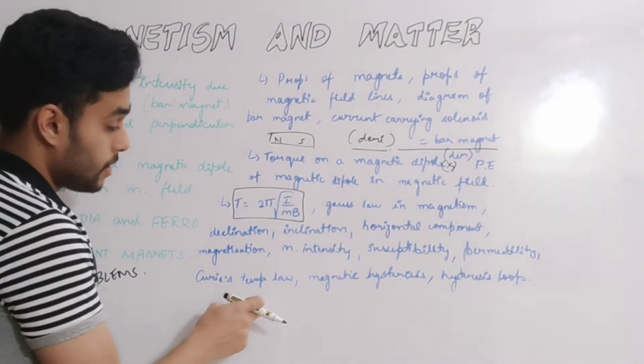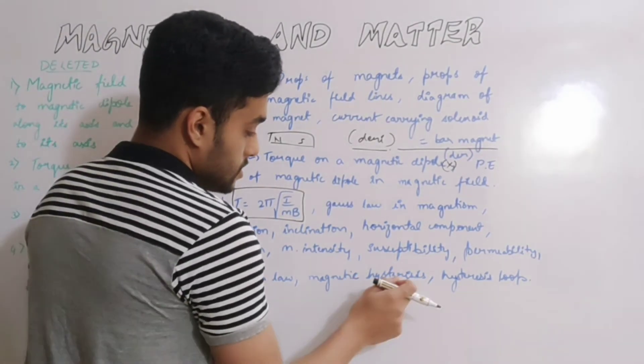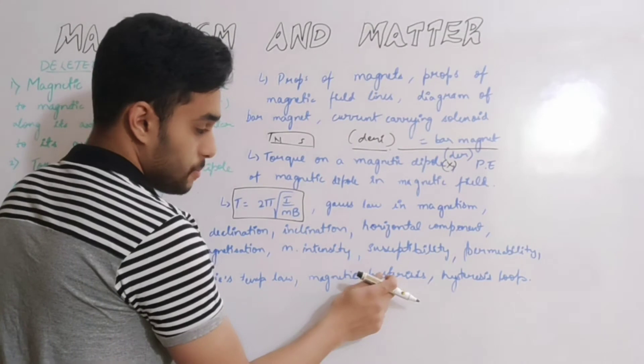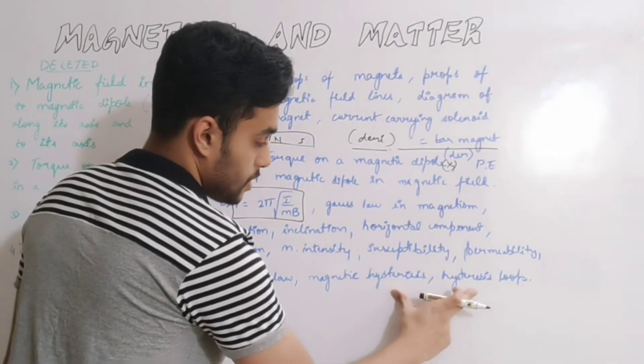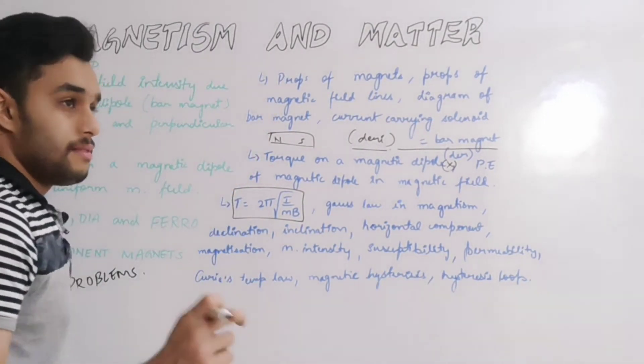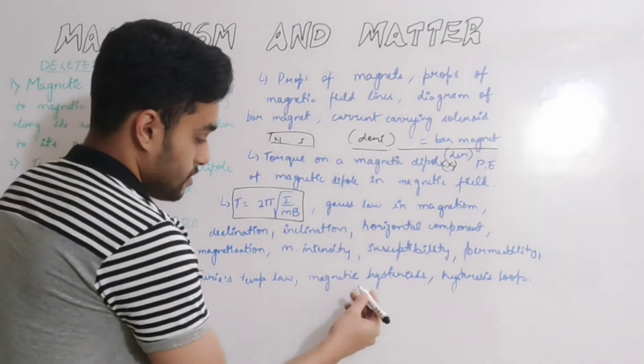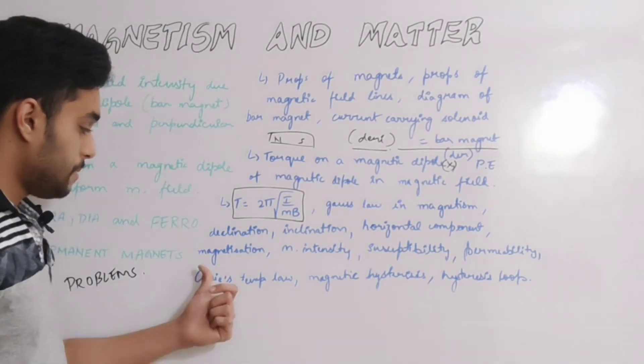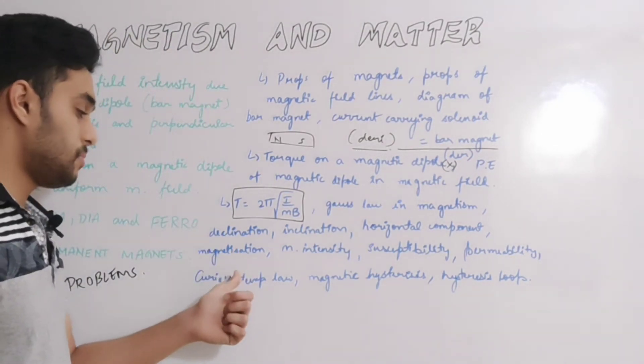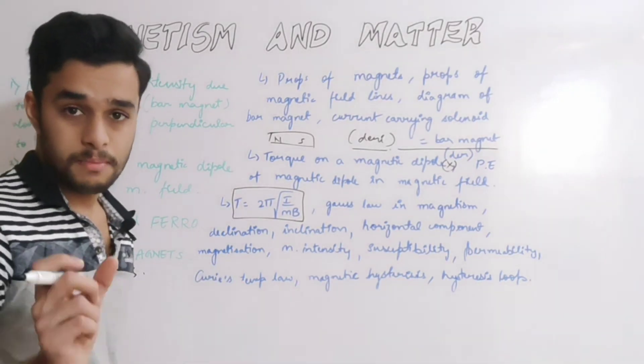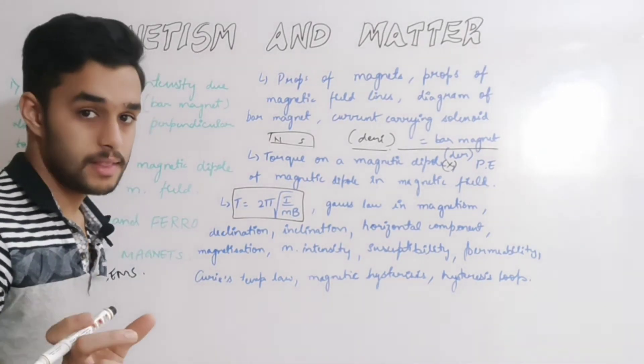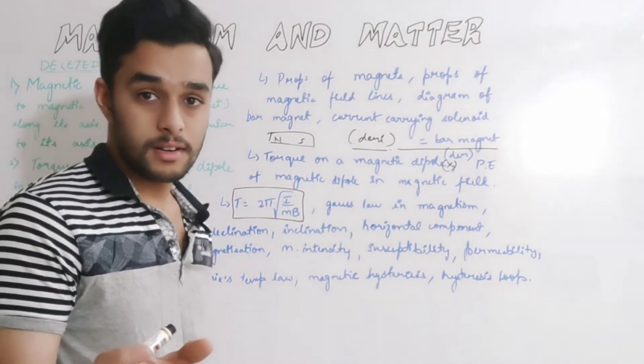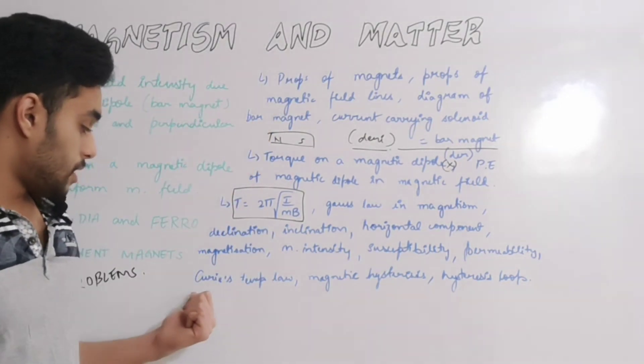Next thing is magnetic hysteresis, this is important for five marks, and hysteresis loop combined together forms one derivation type question, important for five marks. For two marks and one marks, definitions, symbols, expressions - explain the terms type questions. These are important along with Curie's temperature law.